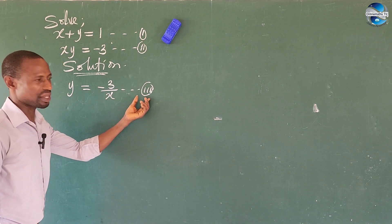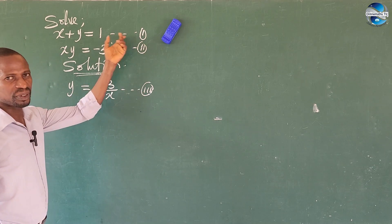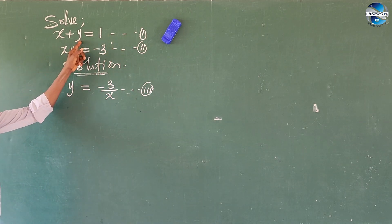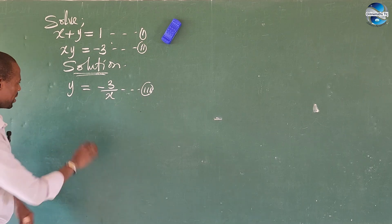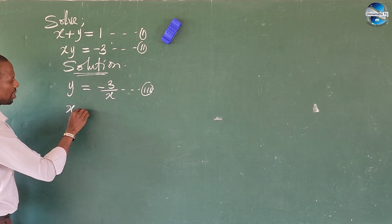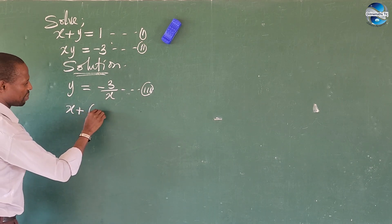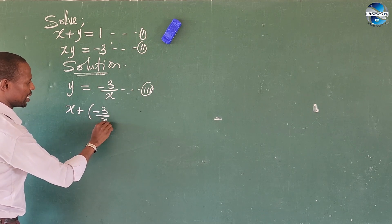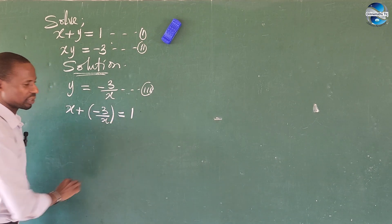So let's put equation 3 into equation 1. Whenever we see y in equation 1, we put in this quantity. So from equation 1, we have x plus bracket minus 3 all over x, equal to 1.